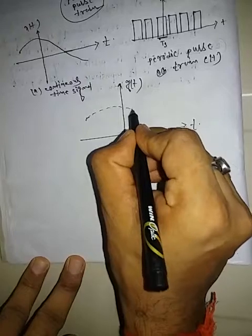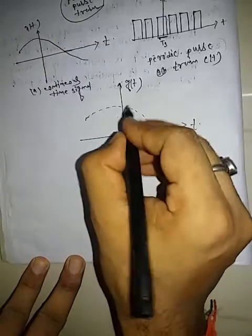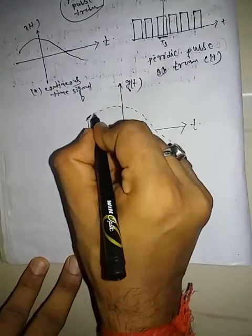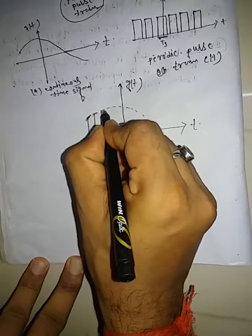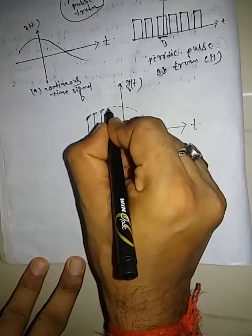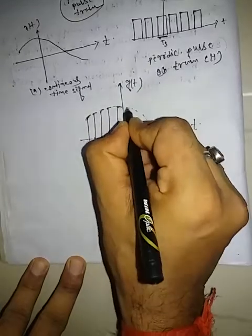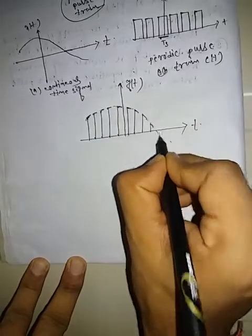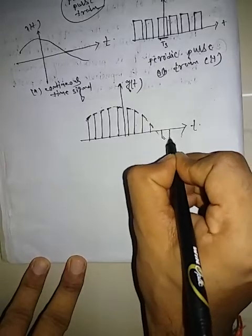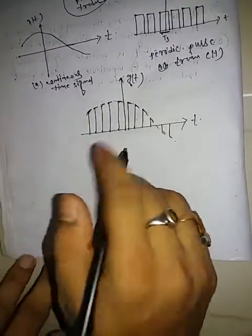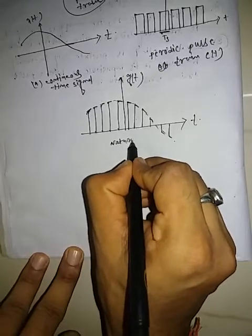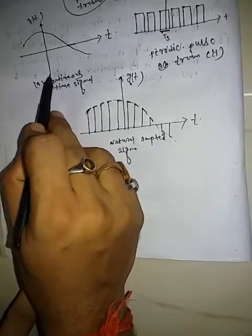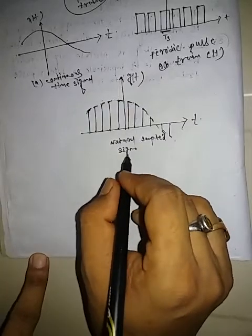The natural sampled signal GT looks like the continuous time signal but with finite width pulses. The continuous time signal is analog in nature, while the natural sampled signal is discrete in nature.